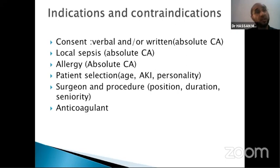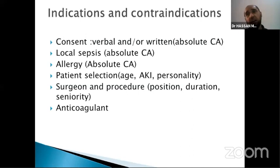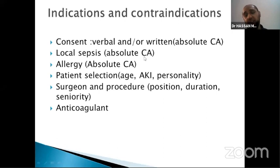Also consider patient personality — psychosis, for instance. If you have a Parkinsonian patient with a lot of tremors who cannot stay stable, it is not wise to give him a regional block. Similarly, if the patient has a renal function problem like acute kidney injury or renal impairment on dialysis, it is not wise to give a big volume of local anesthetic. You should calculate the maximum dose of local anesthetic very carefully.